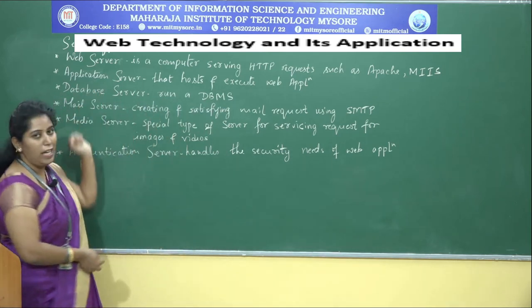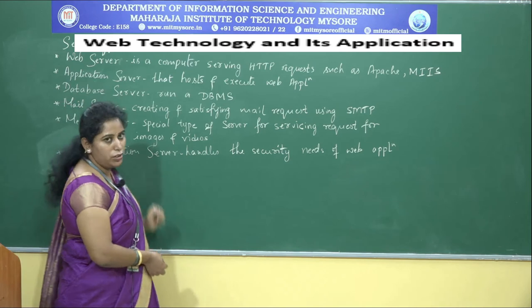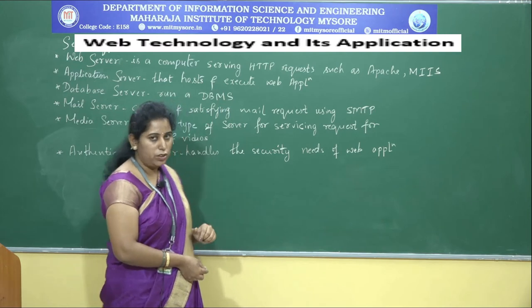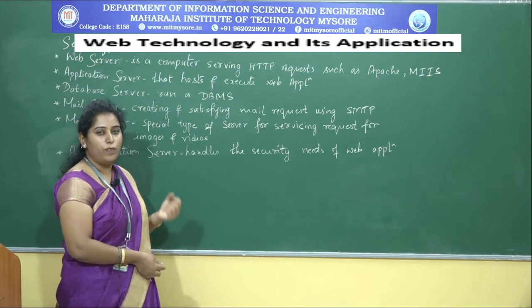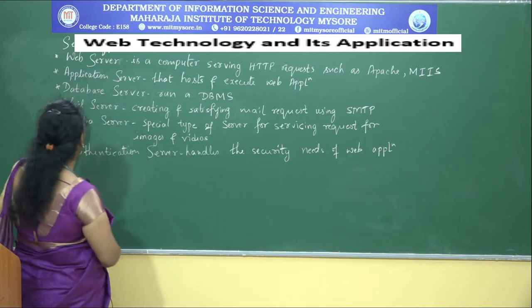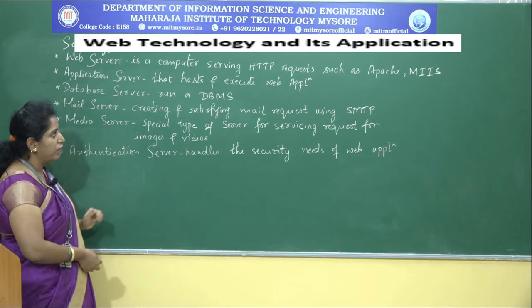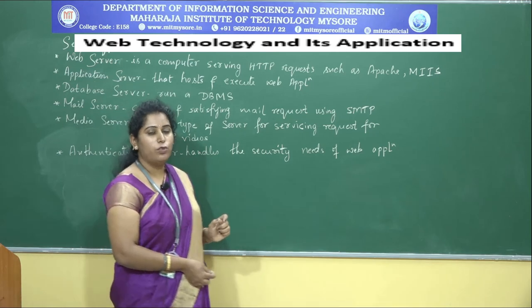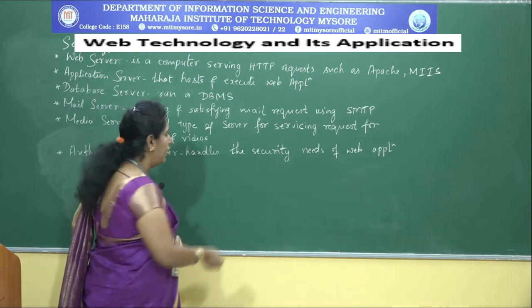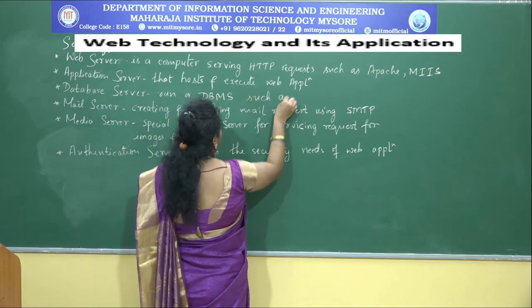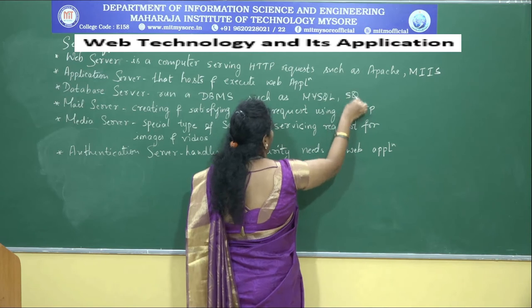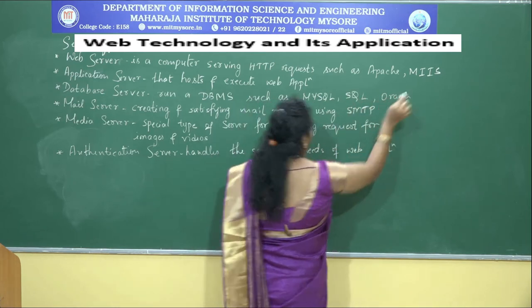Next is the application server — a type of computer that hosts and executes web applications. Any activities related to web applications are handled by the application server. Next is the database server, which is devoted to running a DBMS — Database Management System — such as MySQL, SQL, and Oracle.